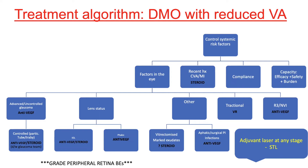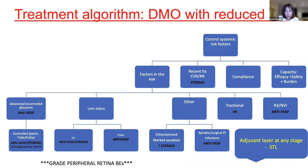All treatment options are available: the mainstay is intravitreal anti-VEGF and steroids, also intravitreal injections. Laser is less common but still a useful modality. For those with vitreomacular traction, vitreoretinal surgery may be considered. In reality, you would tend to start with anti-VEGF and if the response is suboptimal, refer to vitreoretinal colleagues.